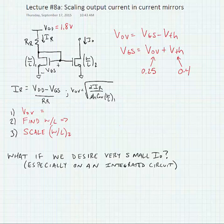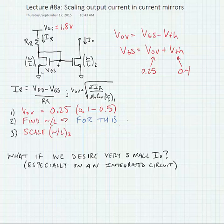What we need to do is pick a VOV. This could be typically 0.25 volts, but it might be in the range of 0.1 volt to half a volt. We're going to find W over L for this VOV and the desired reference current, and you can see we do this using the VOV equation here.